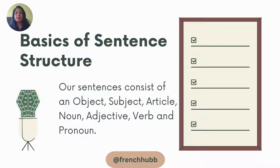Basics of sentence structure. A sentence consists of an object, subject, article, noun, adjective, verb, and pronoun, and many more. So let's see how we use all these things in a sentence.